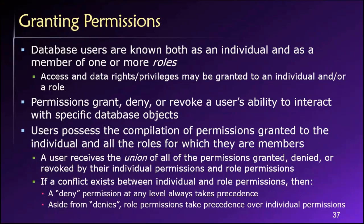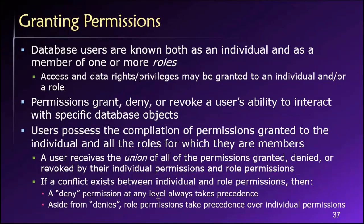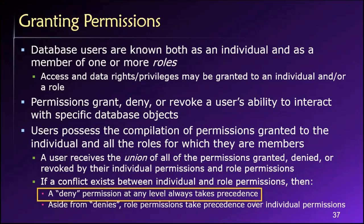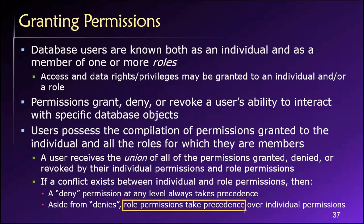When a conflict exists, we tend to be conservative in our security thinking. If you have access to something as an individual user but you belong to a role that does not have access to that data or that table, then you will be denied permission to it. We take a conservative approach to figuring out what permissions are allowed for each individual user. A deny will always take precedence. If I have intentionally denied you permission to do something, it doesn't matter — even if you are in a role that has permission, if I deny you as an individual, you won't be able to access those data or those protected objects. And aside from denies, the general strategy is that role permissions will take precedence over individual permissions.